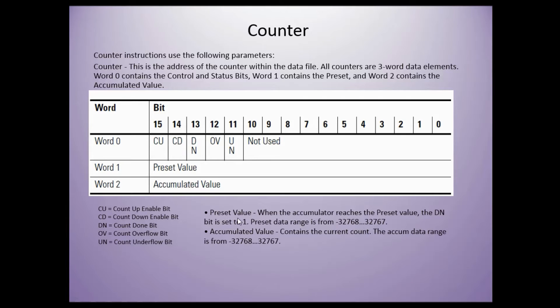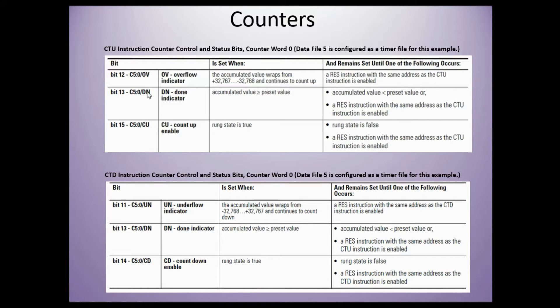The preset value: when the accumulator reaches the preset value, the done bit is set to 1. Preset data range is from negative 32,768 to 32,767. The accumulated value contains the current count. The accumulated data range is the same.